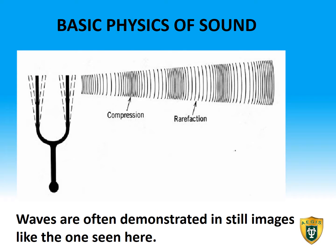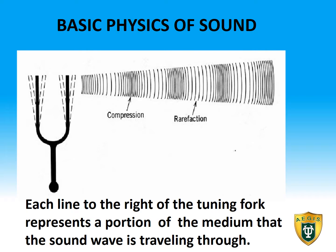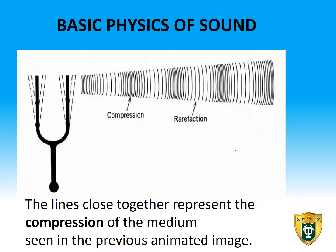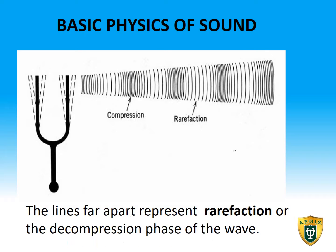Waves are often demonstrated in still images like the one seen here. Each line to the right of the tuning fork represents a portion of the medium that the sound wave is traveling through. The lines close together represent the compression of the medium, seen in the previous animated image. The lines far apart represent rarefaction, or the decompression phase of the wave.